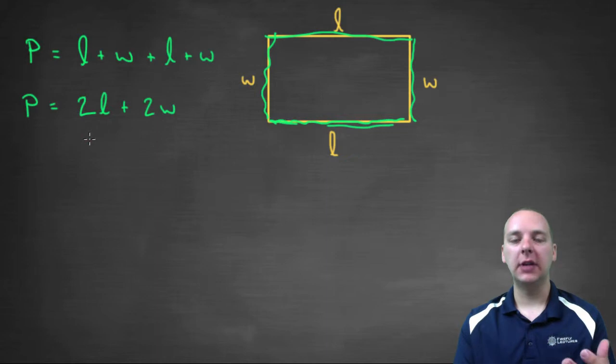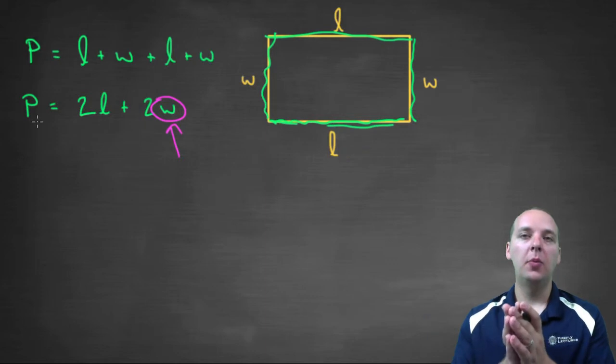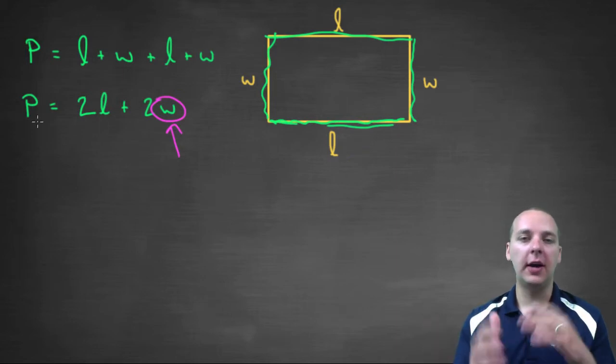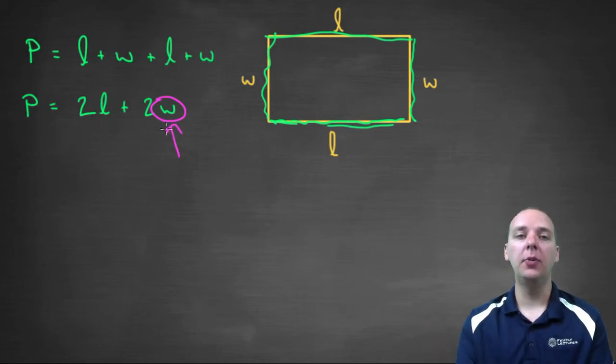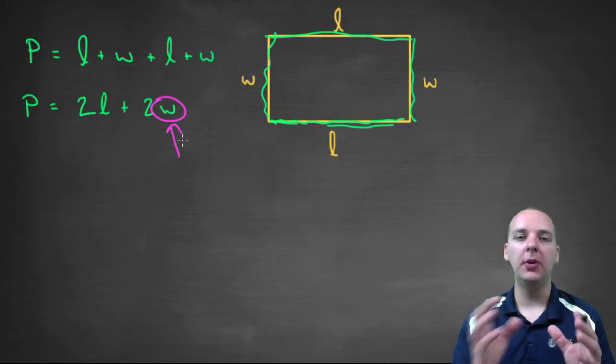Sometimes they'll already give you a literal equation, and what they'll ask you to do is solve for one of the other variables - let's say W for instance - in terms of P and L. The way this is set up, you can find the perimeter if you know the length and the width, but what if you know the perimeter and the length and you want to know the width? You'd have to reorder the terms and solve for W. It's good practice manipulating equations.